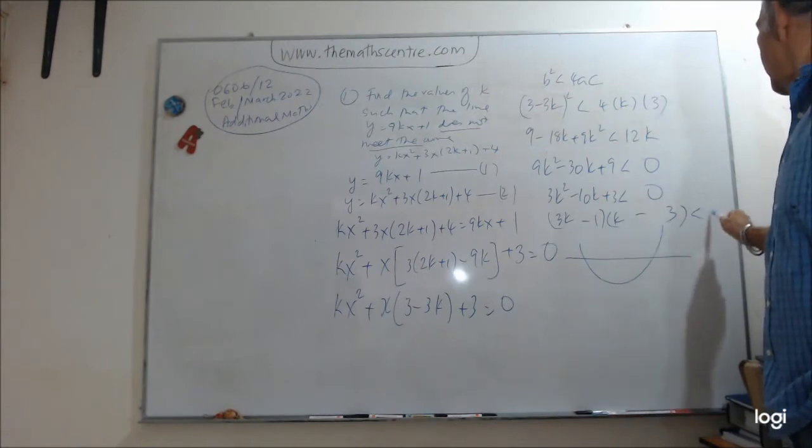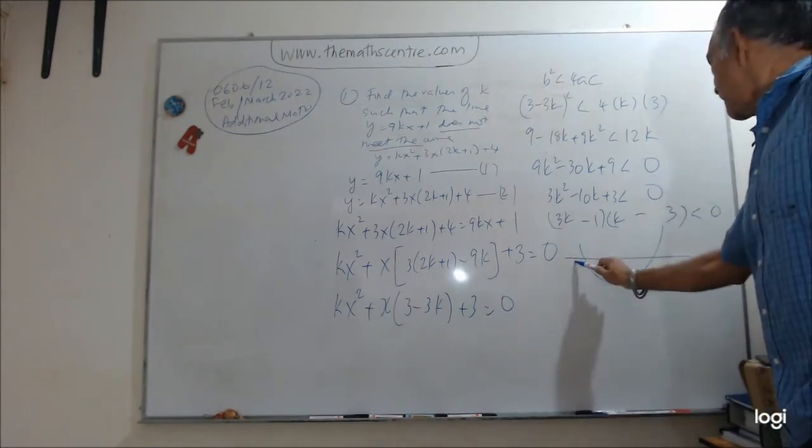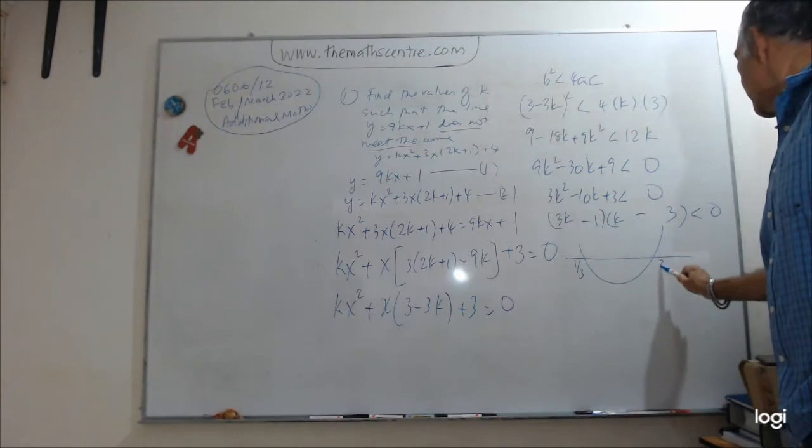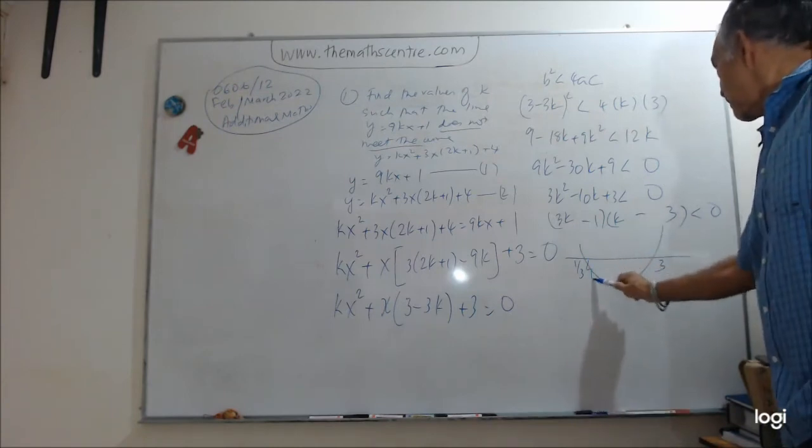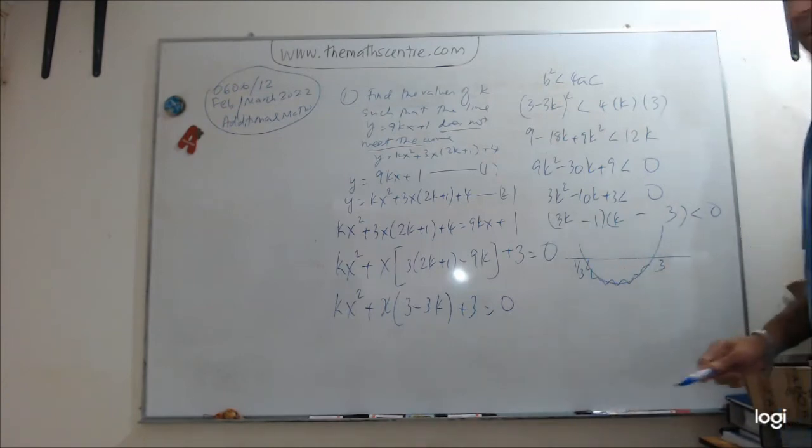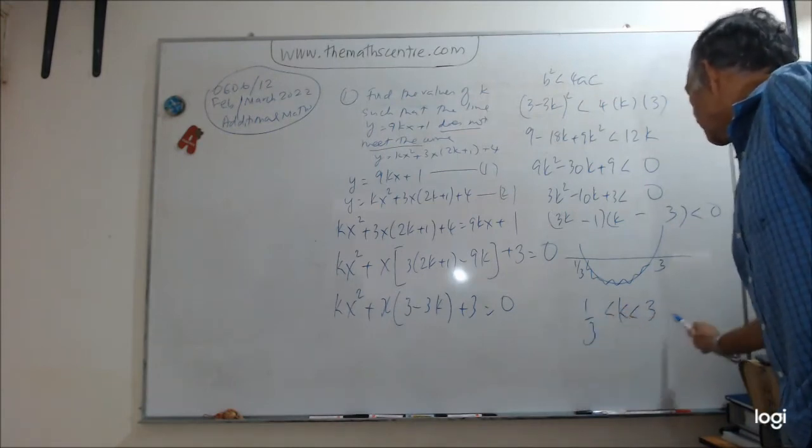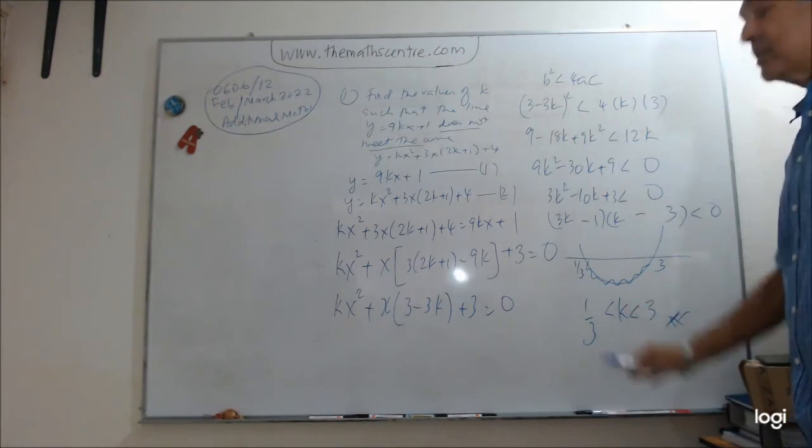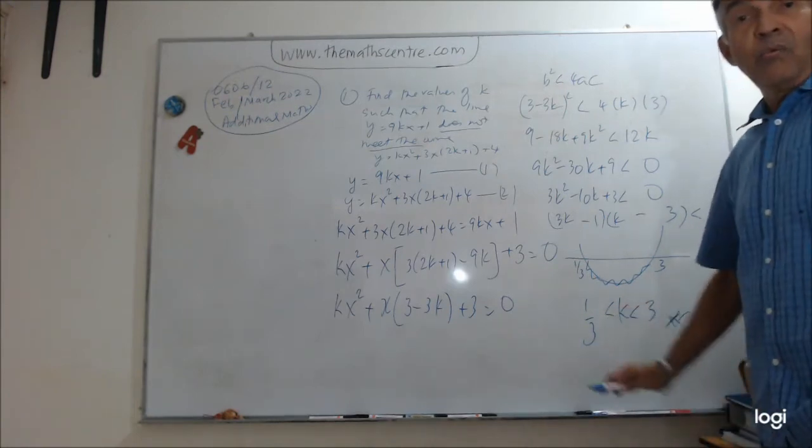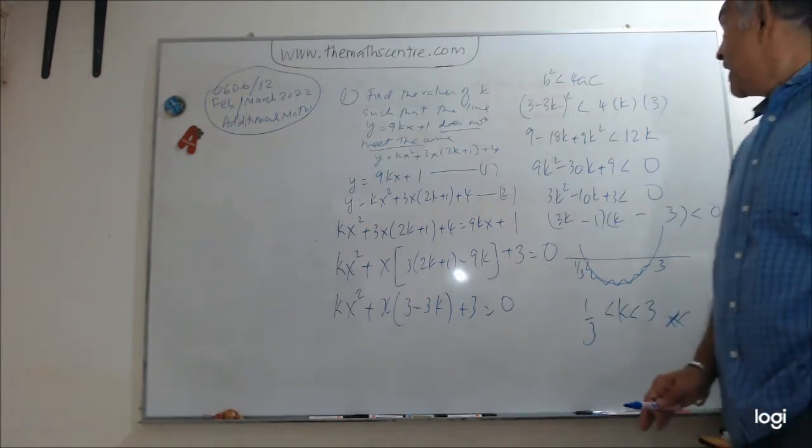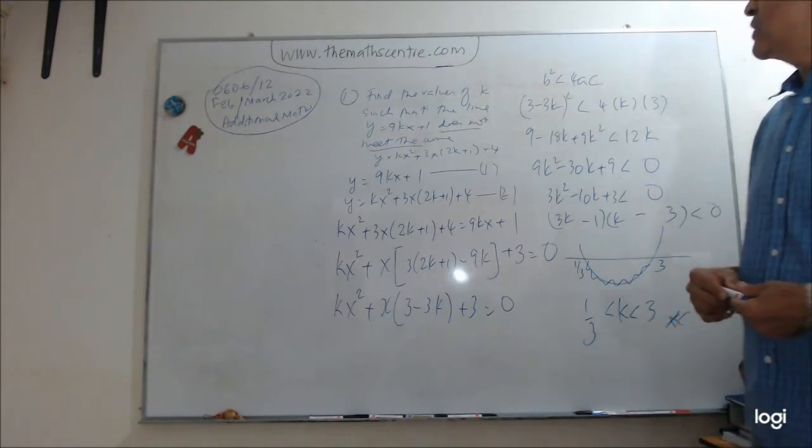So now solving our quadratic. This is 1 over 3. Let me write this here. 1 over 3 and 3. So this is 1 over 3 and this is 3. So this is less than 0. So this is what I'm looking for. So I can write my final answer down. k less than 3 less than 1 over 3. k less than 3. k bigger than 1 over 3. That's it. So this is the solution to this problem.